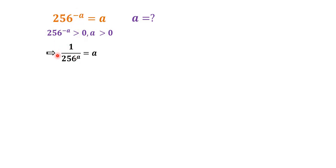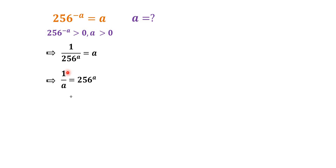We rearrange the original equation. Moving the negative exponent to the denominator gives 1 over 256^a equals a. Rearranging further, we get 1 over a is equal to 256 to the power of a.